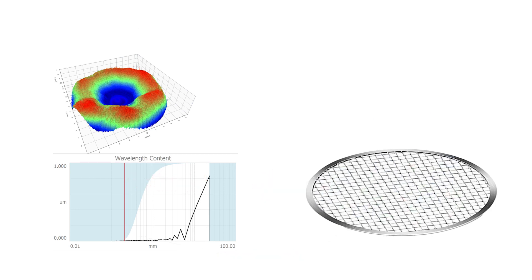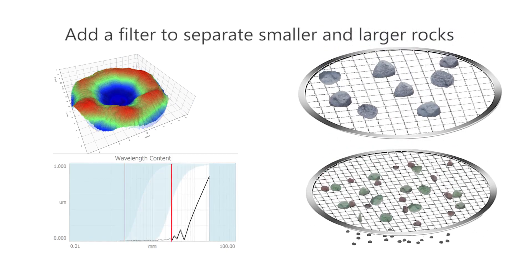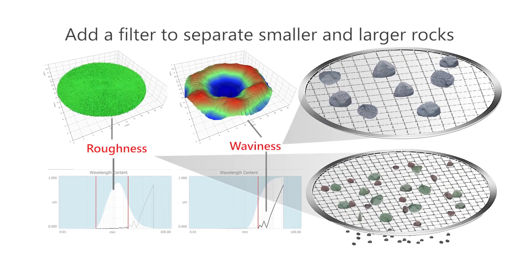We might take this a step further and divide the remaining rocks into larger and smaller sizes. In the surface world, this is like separating roughness from waviness. We call this filter the roughness cutoff, or Lambda C, or the L filter.